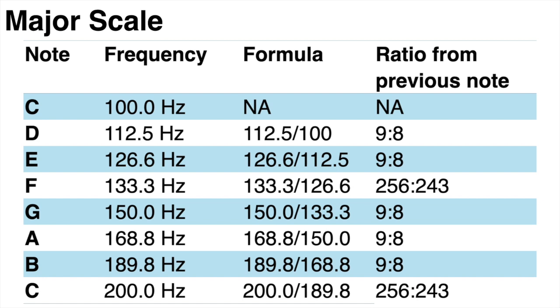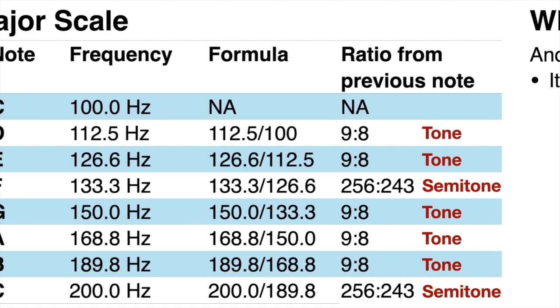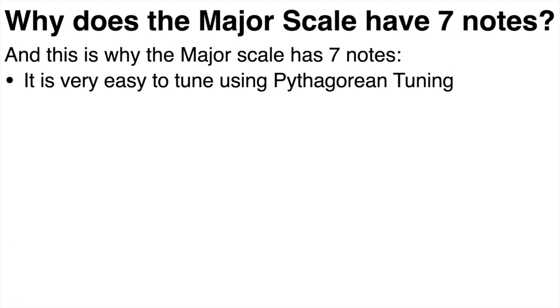So as you can see we still have two intervals. A smaller one of 256 over 243 which we can call a semitone and a larger one of 9 over 8 which we can call a tone. And so we have now derived the major scale. We started with the major pentatonic scale which is very consonant and pleasant sounding and then added two more notes in to fill the large gaps created by that scale. We now have the familiar tone tone semitone tone tone tone semitone pattern of the major scale. And this is why the major scale has seven notes.